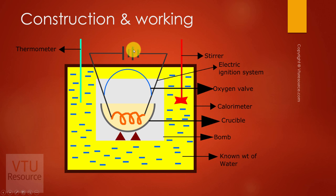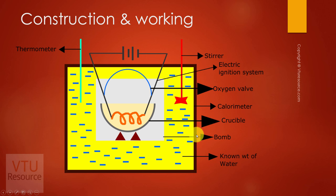The bomb is also equipped with an electric ignition system because the quantity of fuel taken is very small and we cannot ignite it using a matchbox or lighter since it is airtight. The bomb is kept in an airtight copper vessel known as the calorimeter. The calorimeter, which is a copper vessel, contains a known weight of water, a stirrer, and a thermometer in order to measure the rise in temperature.